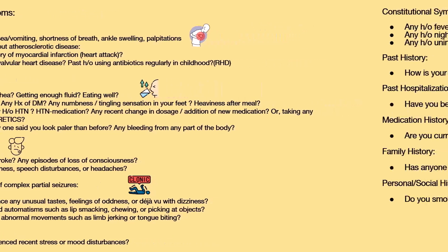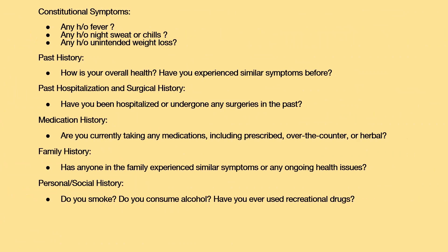Moving on to constitutional symptoms, which indicate underlying systemic issues: any recent history of fever, night sweats, chills, or unintended weight loss. Ask about overall general health, any similar previous symptoms, previous hospitalizations or surgeries, current medications including over-the-counter drugs, family history of similar symptoms, and personal or social history including smoking, alcohol, and recreational drug use.